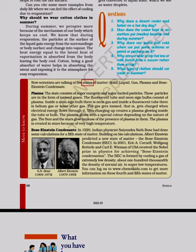Now scientists are talking of five states of matter: solid, liquid, gas, plasma and Bose-Einstein condensate. Plasma: The state consists of super energetic and super excited particles. These particles are in the form of ionized gases. The fluorescent tube and neon sign bulbs consist of plasma. Inside a neon sign bulb there is neon gas and inside a fluorescent tube there is helium gas or some other gas. The gas gets ionized, that is, gets charged when electrical energy flows through it. This charging up creates a plasma glowing inside the tube or bulb. The plasma glows with a special color depending on the nature of gas. The sun and the stars glow because of the presence of plasma in them. The plasma is created in stars because of very high temperature.